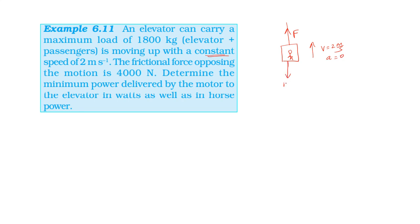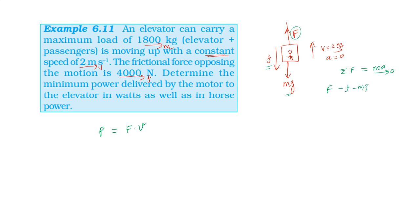The downward force is the weight force. There is also the friction force opposing the motion. This friction force is 4000 N. The mass of the elevator and passenger is 1800 kg, moving at 2 m per second. The power of the force equals force times velocity, and the force equals friction plus mg.